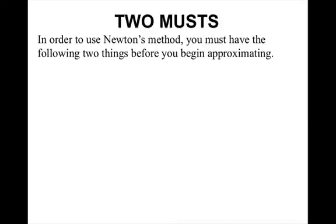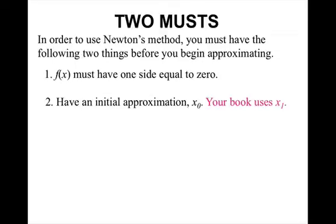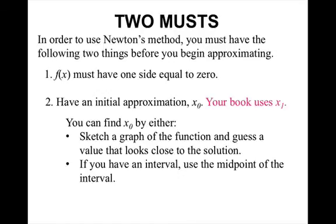Now there are two musts when you do Newton's method. In order for Newton's method to work, you have to do two things before you begin approximating. First, f(x) must have one side equal to zero. Second, have an initial approximation x₀. Your book uses x₁ for the initial approximation. Really doesn't matter. Now you can find x₀ by either sketching a graph of the function and guess a value that looks close to the solution. And for those of you who have the TI-84s or 83s, if you recall when you find the zero with your calculator, after you do the left and right bound, it then gives you that guess. That's what they're actually asking you to guess for, is an initial solution. If you have an interval, use the midpoint of the interval.